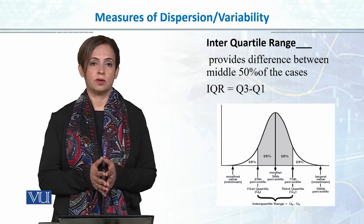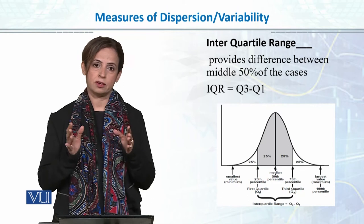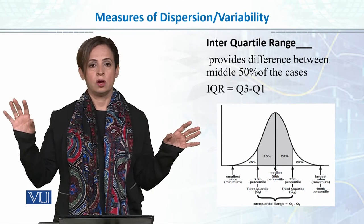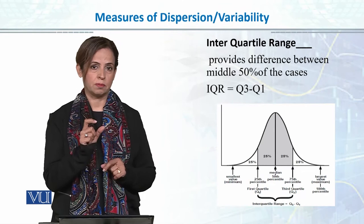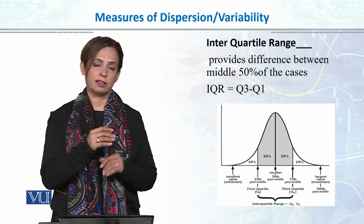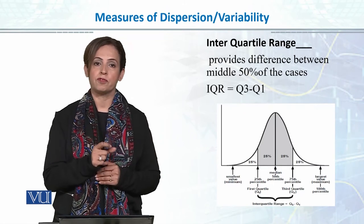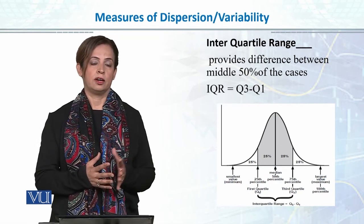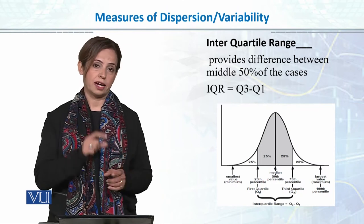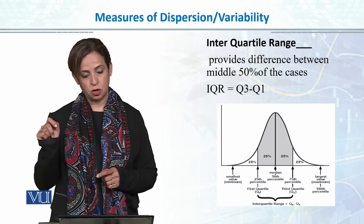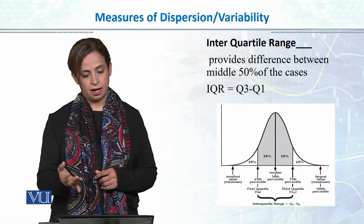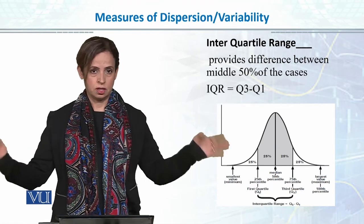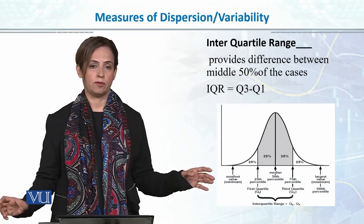Interquartile range also tells you about the spread of scores, but it focuses on the middle 50% of the cases. Just like median takes the central value and ignores extreme values, for measuring dispersion we focus on the middle 50% of cases. The formula is Q3 minus Q1, giving you variability within the middle 50% of cases while ignoring the lower and upper ends of the data.